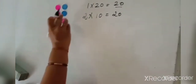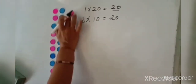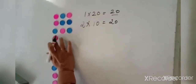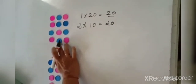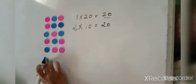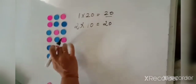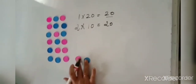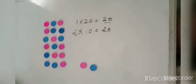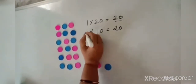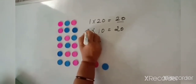Now with the same coins, if we arrange three coins in each row, I will be getting 1 through 6 rows. That means 6 threes are 18 and two coins are left. That means the number 20 is not completely divisible by 3.